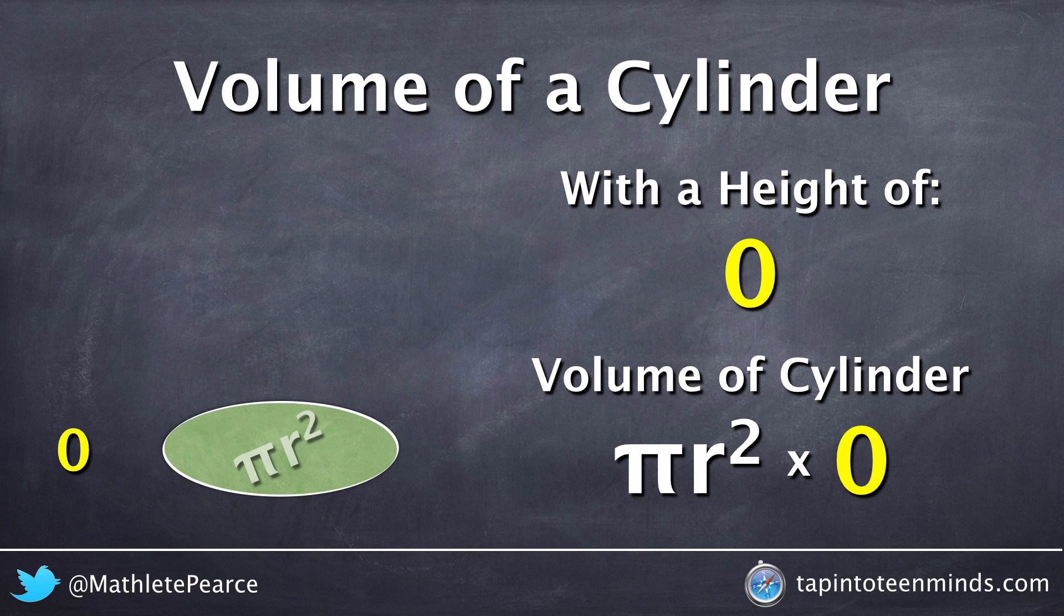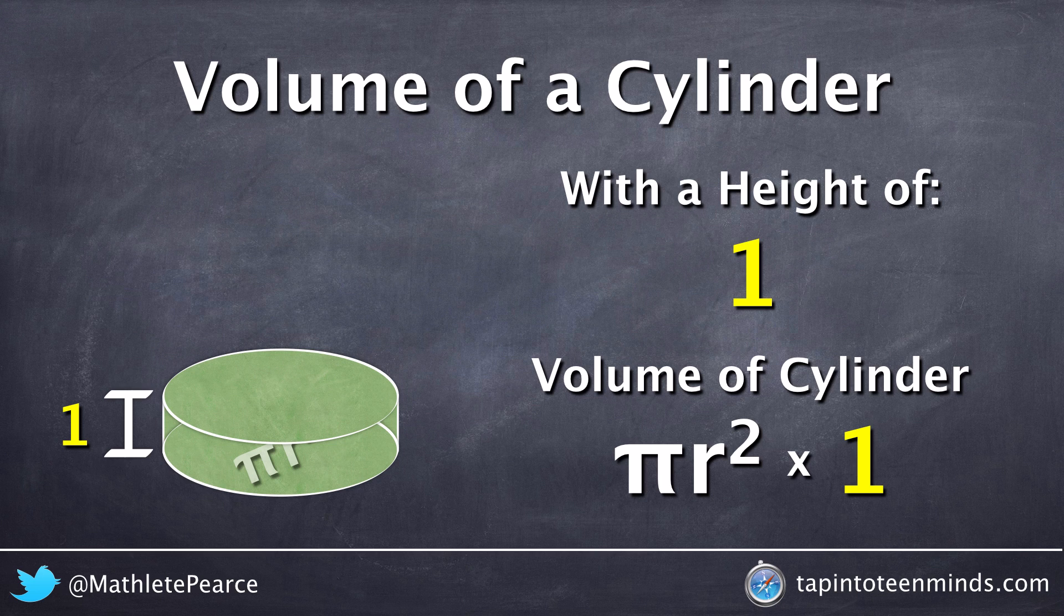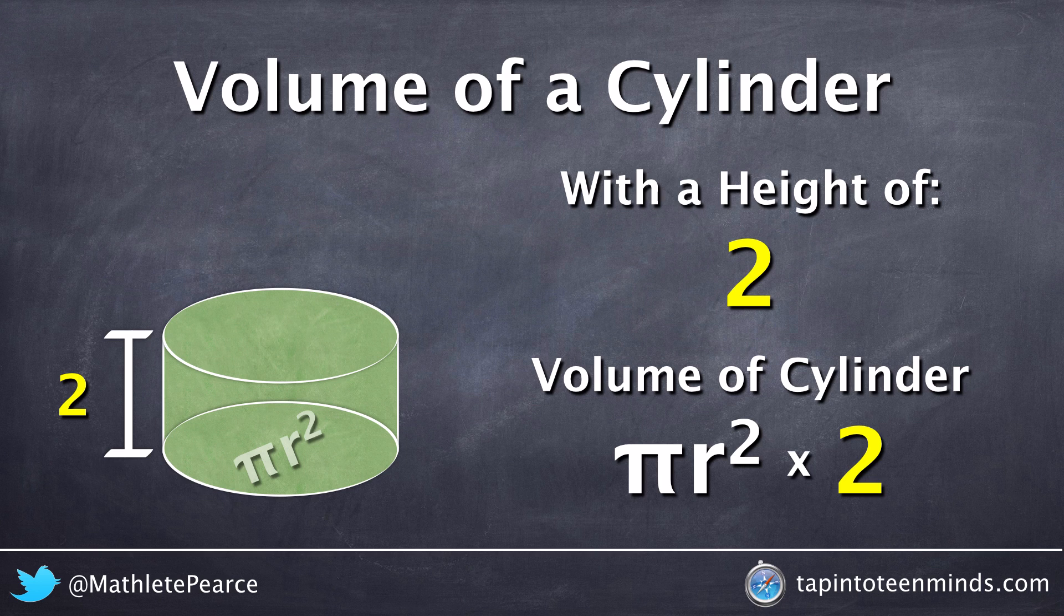But picture this. As our height increases to 1 unit, we can see the volume of a cylinder is simply the area of a circle, pi r squared, times 1.